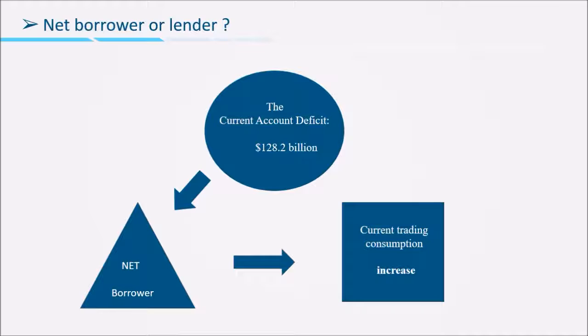Therefore, we can conclude that the USA is the net borrower. Since the USA is an open economic country, the current account deficit can result in current trending consumption increase.